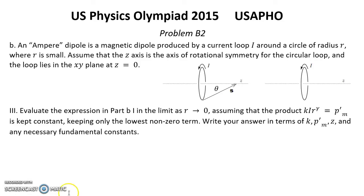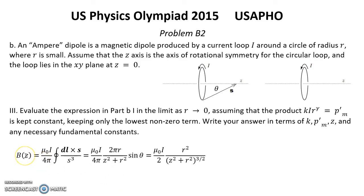Solution for Question 3: Evaluate BZ in the limit as R→0, with K·I·R^γ = PM' kept constant. Starting from the expression for BZ, and noting that I·R² is constant, the denominator reduces to Z³ as R→0. Rewriting in this simplified form gives the final answer for Question 3.